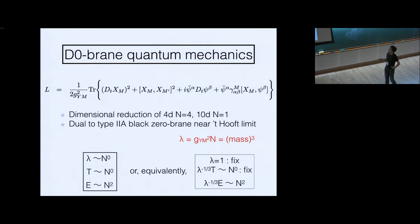According to the duality conjecture, this should be dual to the type IIA black zero-brane if we go close to the 't Hooft limit — meaning the 't Hooft coupling lambda = g_YM squared times N is fixed and N is sent to infinity. In this zero-plus-one-dimensional theory, this coupling constant has mass dimension 3.